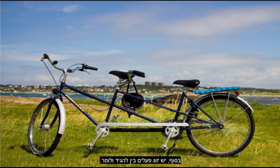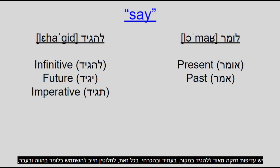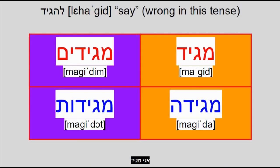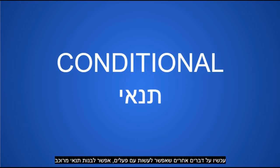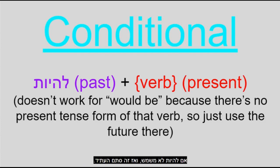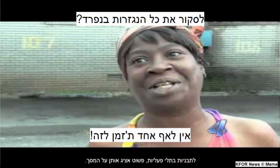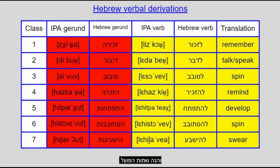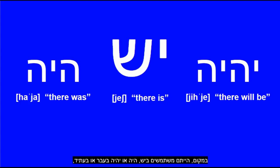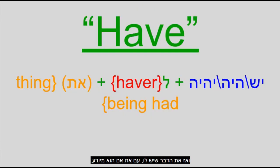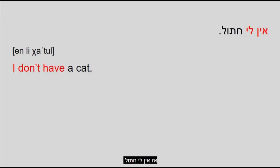The word for 'need,' 'tzarich,' is syntactically a verb but morphologically an adjective, so it doesn't get conjugated for tense or person, just gender and number. The verbs 'lagid' and 'lomar' both mean 'say,' but are used in different tenses — there's a strong preference for 'lagid' in the infinitive, future, and imperative, but you must use 'lomar' in present and past. 'Ani magid' is not a thing. You can also form a composite conditional with the past tense of 'lihyot' and the present tense of the main verb. The verb 'have' doesn't exist in Hebrew — instead, you use 'yesh' (there is), and for possession use the preposition 'le' conjugated for the person. 'I have a cat' is 'yesh li chatul' — literally 'there is a cat to me.'